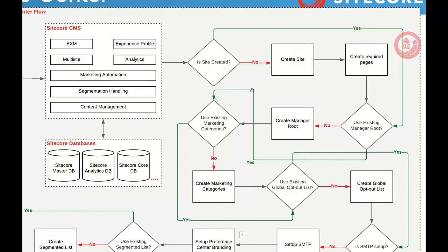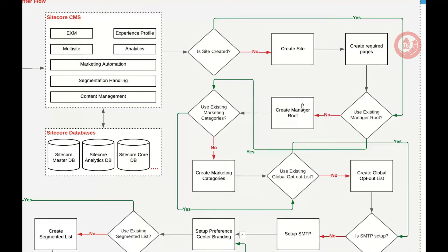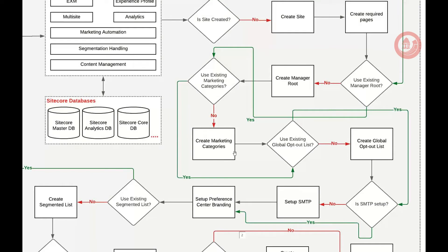Question: When you say 'site is created,' are we talking about the Sitecore site or something else? I am talking about the Sitecore site — whether the site is currently present or you need to implement a new one. So I started the journey from there. Then it comes to the manager route, because the manager route will have marketing categories you need to give references to. There is a global opt-out concept that comes out of the box in Sitecore — that is a very good concept.